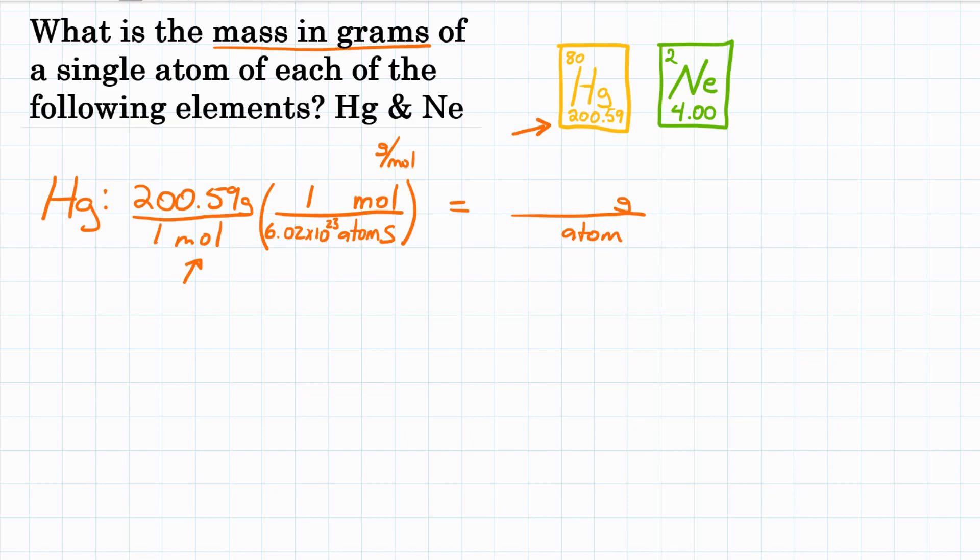So, just looking at the units, if we wanted to solve this equation, grams will stay, moles will cancel, because it's on the bottom and on the top, and atoms will stay. So in the end, we're going to have grams per atoms. So let's do the math.